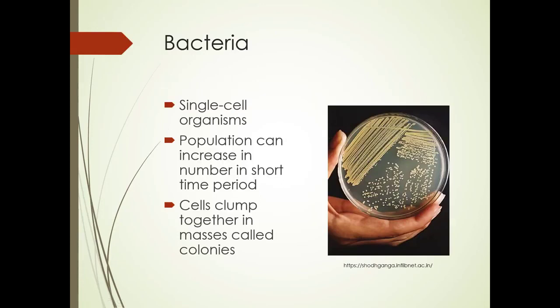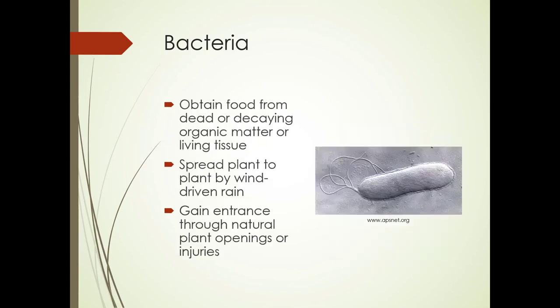Bacteria are single cell organisms. They can increase in number in a very short period of time, and when they clump together in masses, you call it a colony. They obtain food from dead or decaying organic matter or living tissue. They spread plant to plant by wind-driven rain and gain entrance through natural plant openings or injuries.